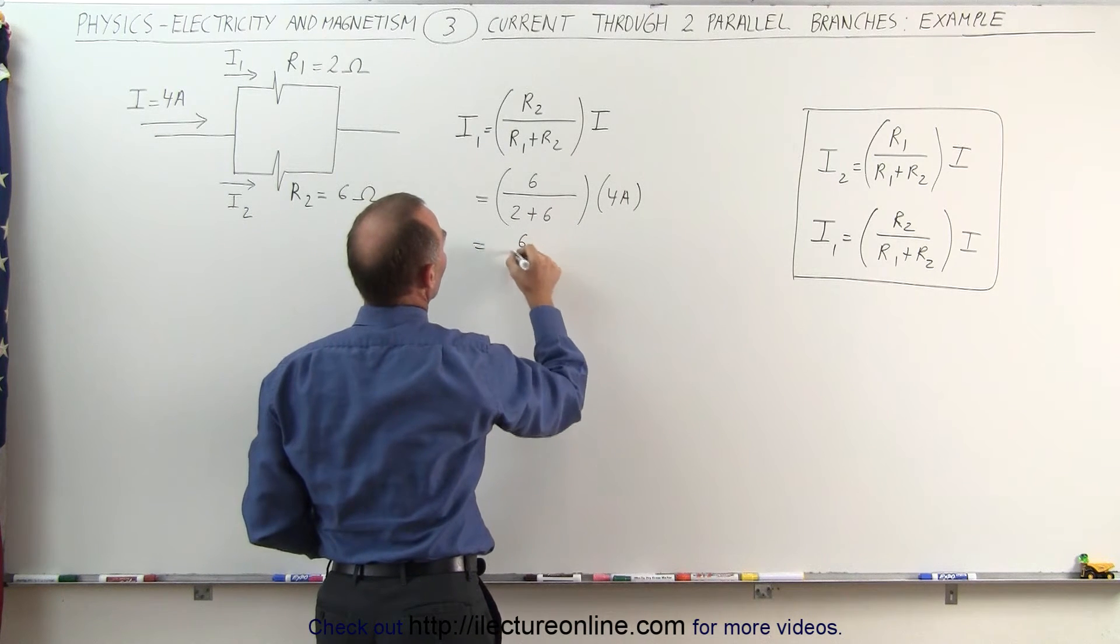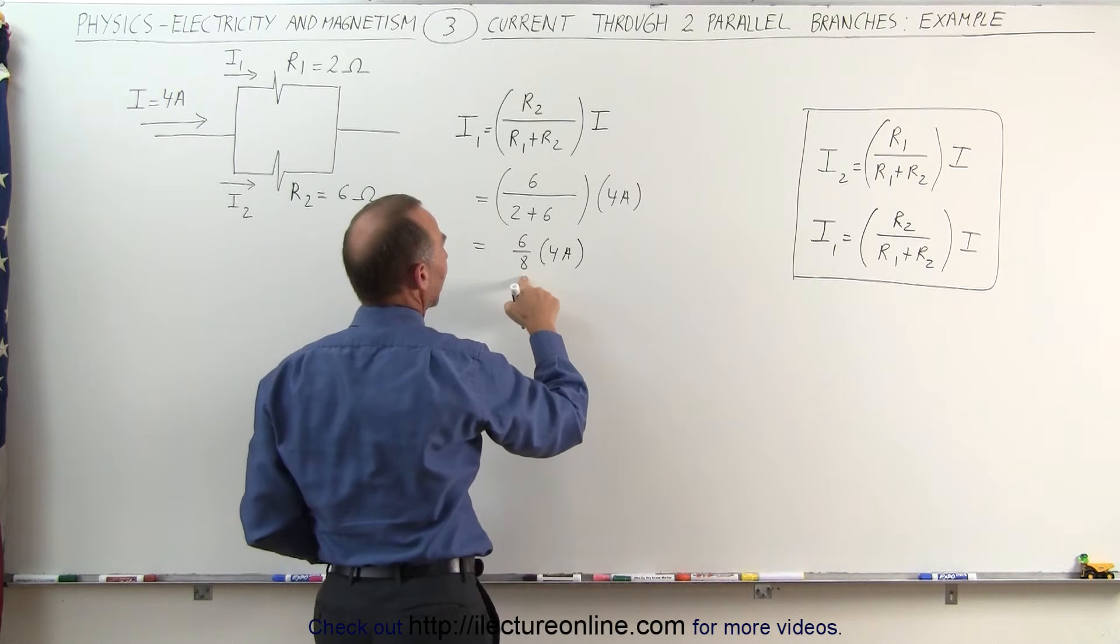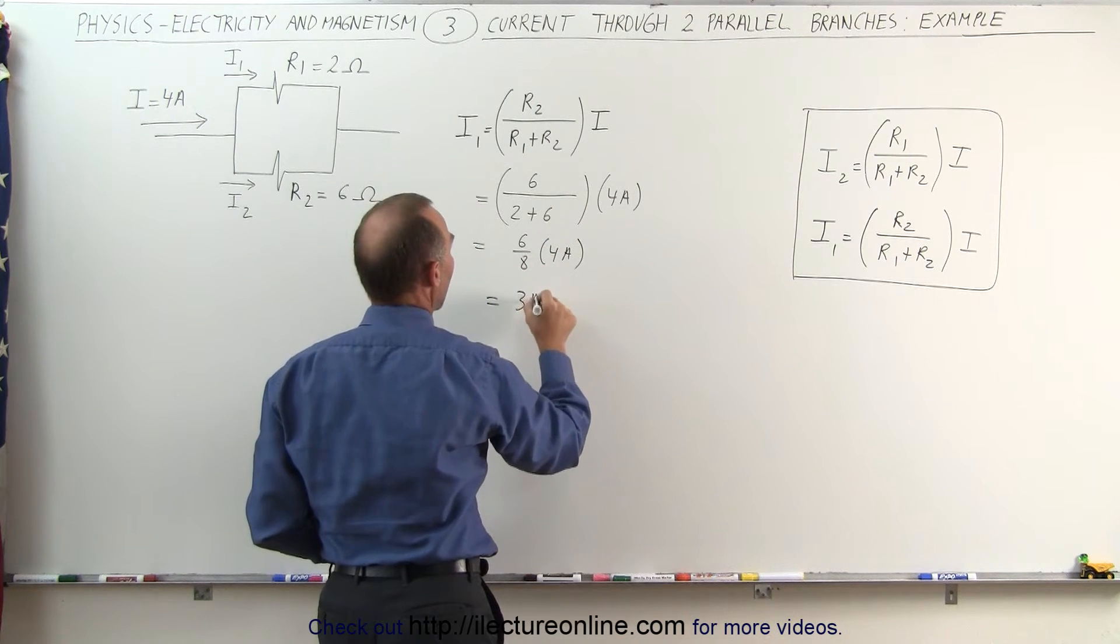So this would be equal to 6 divided by 8 times 4 amps. 4 divided by 8 is 1 half, times 6 equals 3 amps.